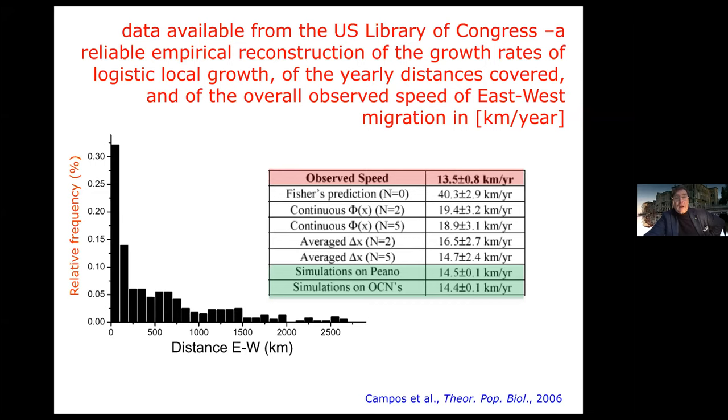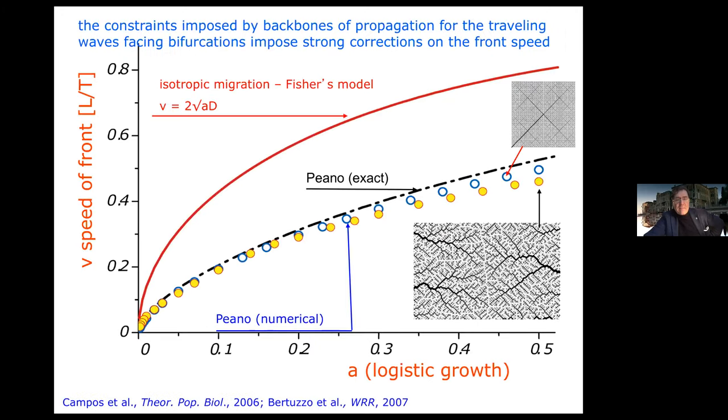You had the yearly distribution of relative frequency of distance crossed year by year by colonizers in different directions. The distribution of jumps was actually given and didn't need to be calibrated. The Fisher prediction would be of the order of 40 kilometers per year. What is totally remarkable is that if you take any simulation, you go immediately to speeds of the order of 14 kilometers per year. The actual observed speed of expansion was 13.5. The data suggests that the very nature of the substrate was dominated by features of the river network itself.